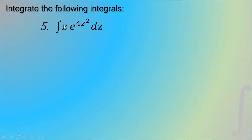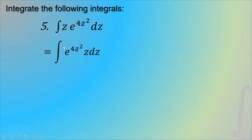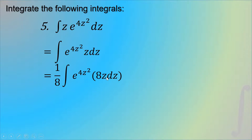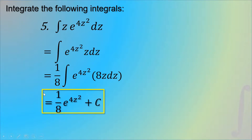Number 5: the integral of z times e raised to 4z squared dz. We differentiate the exponent 4z squared to get 8z dz. Our integrand lacks the constant 8, so we place 8 inside and one-eighth outside the integral sign. That gives one-eighth times the integral of e raised to 4z squared times 8z dz. Applying the exponential formula, the result is one-eighth of e raised to 4z squared plus C.